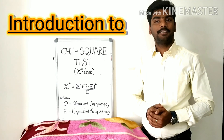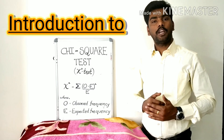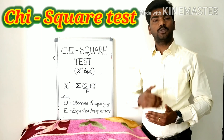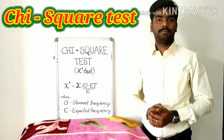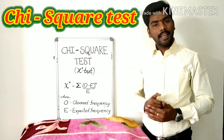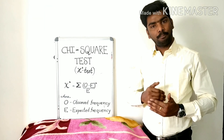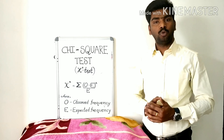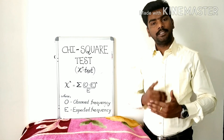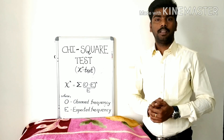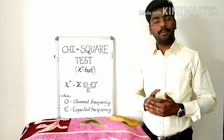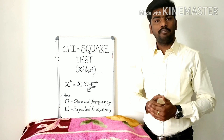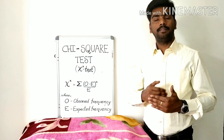Hello students and friends. Today we are going to learn the next test called chi-square test. Chi-square test is one of the simplest and widely used non-parametric tests. Non-parametric means the mu value or the sigma value — nothing will be given.